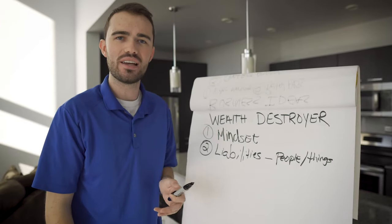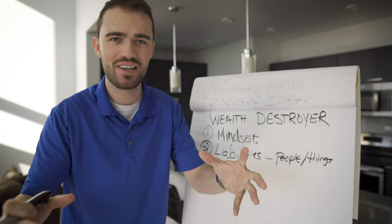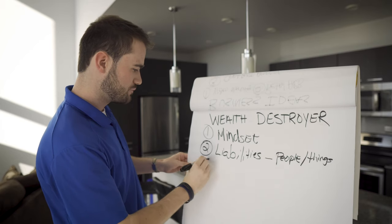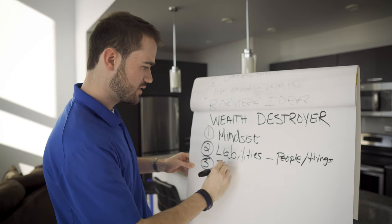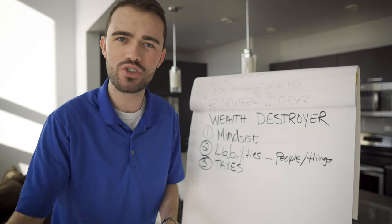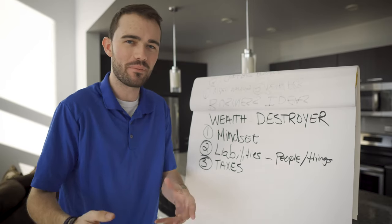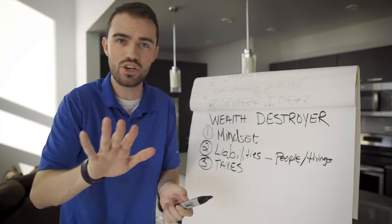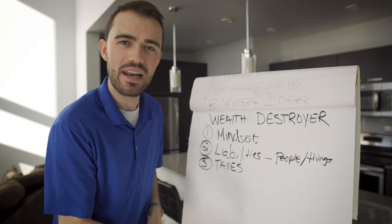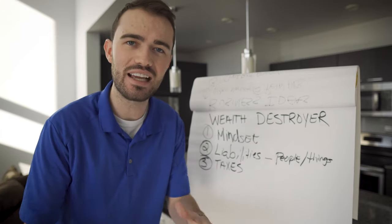So understand that liabilities are the reason that you are getting your books, your bank accounts, your wallets destroyed. Number three, taxes are another wealth destroyer. Now when you think about it, you might be saying, well Patrick, you can't avoid taxes. I know you can't. But what you can do is help eliminate taxes. You can play within the guidelines.